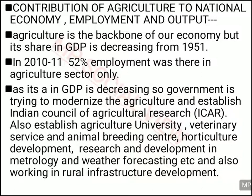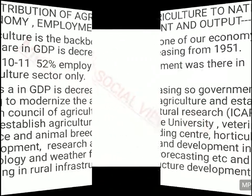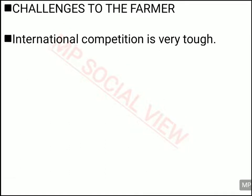The government established many agricultural universities. Veterinary doctorate systems and animal breeding centers were introduced to improve animal health and facilities on farms. A horticulture development program was launched to improve fruits and vegetable cultivation. Research and development in meteorology and weather forecasting also started, since farmers depend greatly on weather conditions. Along with these programs, the government also focused on developing rural infrastructure in our country.